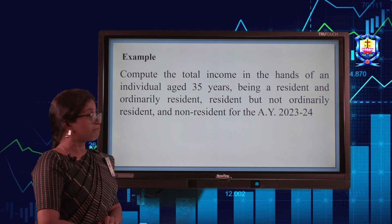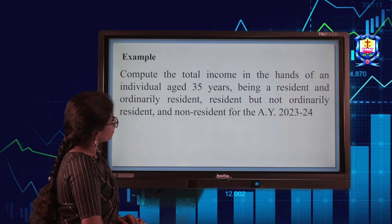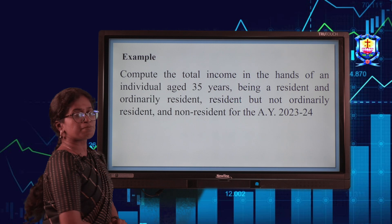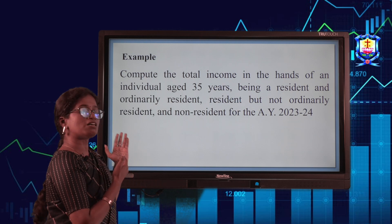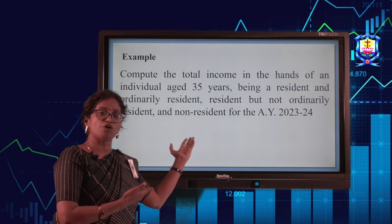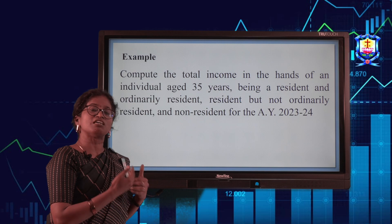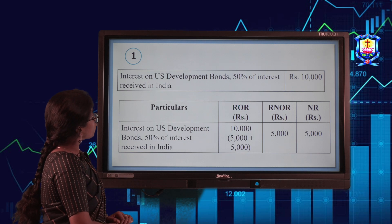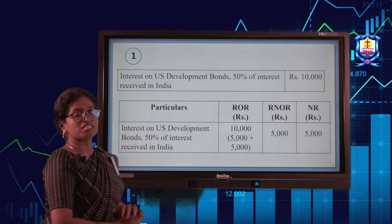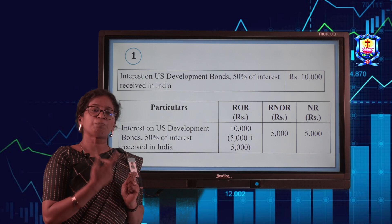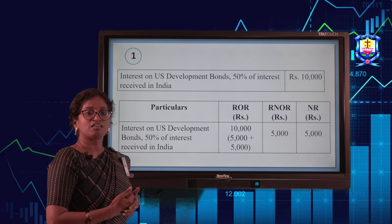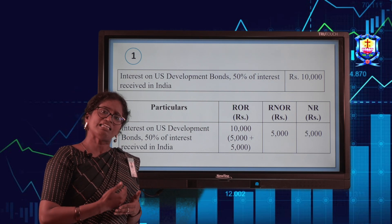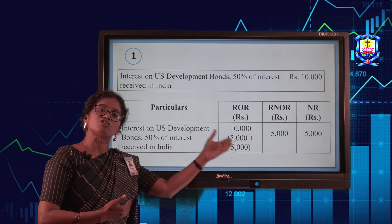Let me explain with a simple example. Compute the total income for an individual aged 35 years being ROR, RNOR, and non-resident in three cases. First: interest on US Development Bonds, with 50% of the interest received in India. We check the source principle and receipt principle. Since 50% of the interest is received in India, that portion is Indian income, and Indian income is taxable for all types of taxpayers.